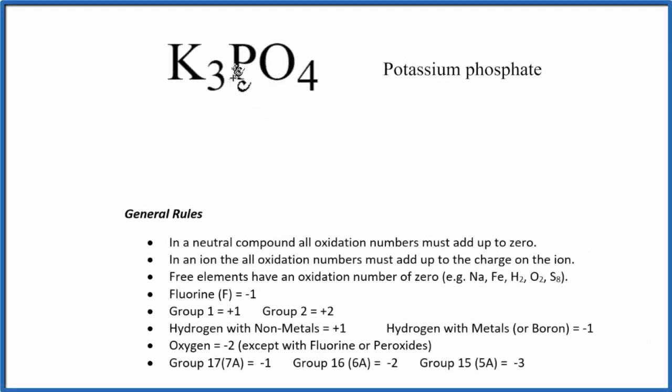In this video, we'll find the oxidation numbers for each element in K3PO4, potassium phosphate. The first thing to note is this is a neutral compound. There's no plus or minus charge up here like we have with an ion. So with a neutral compound, all the oxidation numbers have to add up to zero. That's really helpful.